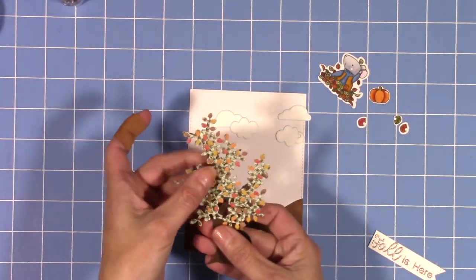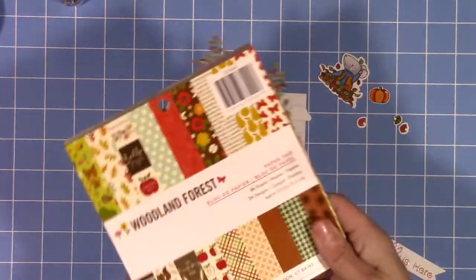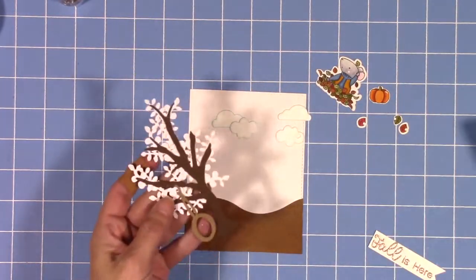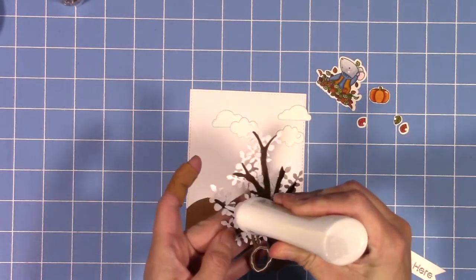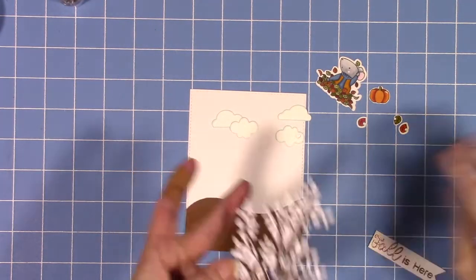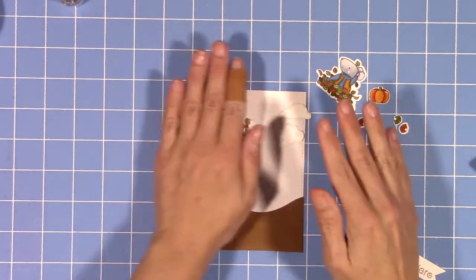Now I'm just going to attach my tree. I made a yellow frame to go around the outside of the card which I will place on before I trim down the tree.